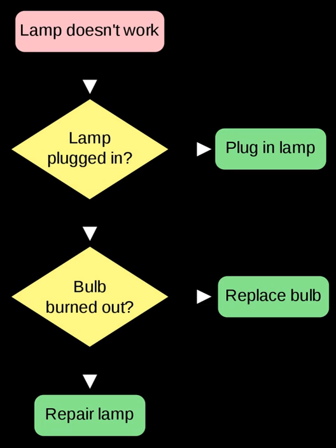Starvation is usually caused by an overly simplistic scheduling algorithm. For example, if a poorly designed multi-tasking system always switches between the first two tasks while a third never gets to run, then the third task is being starved of CPU time. The scheduling algorithm, which is part of the kernel, is supposed to allocate resources equitably — that is, the algorithm should allocate resources so that no process perpetually lacks necessary resources.